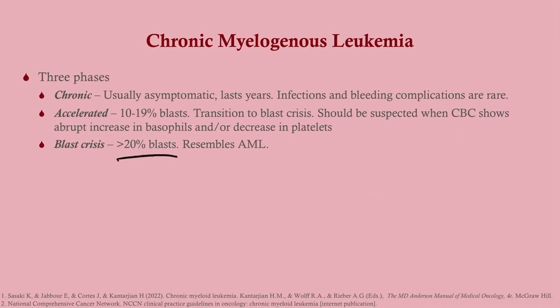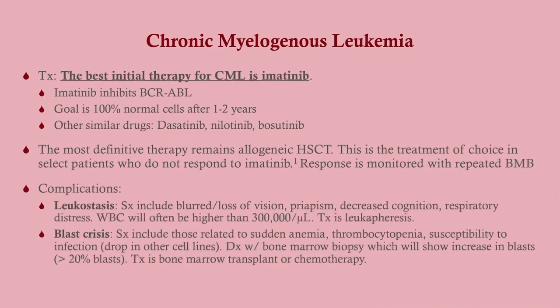The best initial therapy for CML is imatinib. Imatinib is a tyrosine kinase inhibitor — a small molecule that inhibits the BCR-ABL tyrosine kinase, stopping cellular proliferation. There are other drugs that do the same thing, but imatinib is the first choice. You won't be asked to choose between imatinib, nilotinib, and similar drugs.